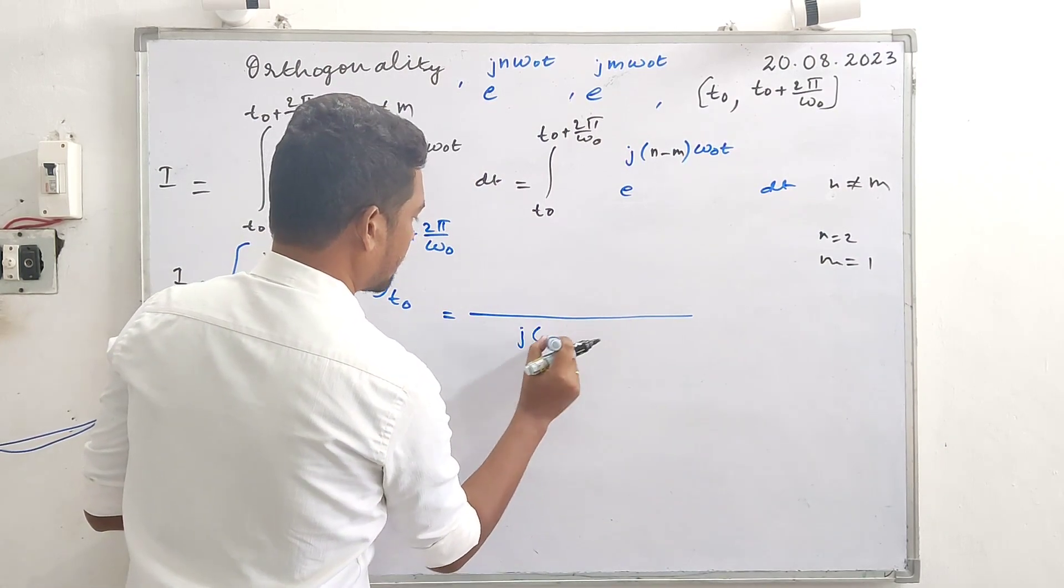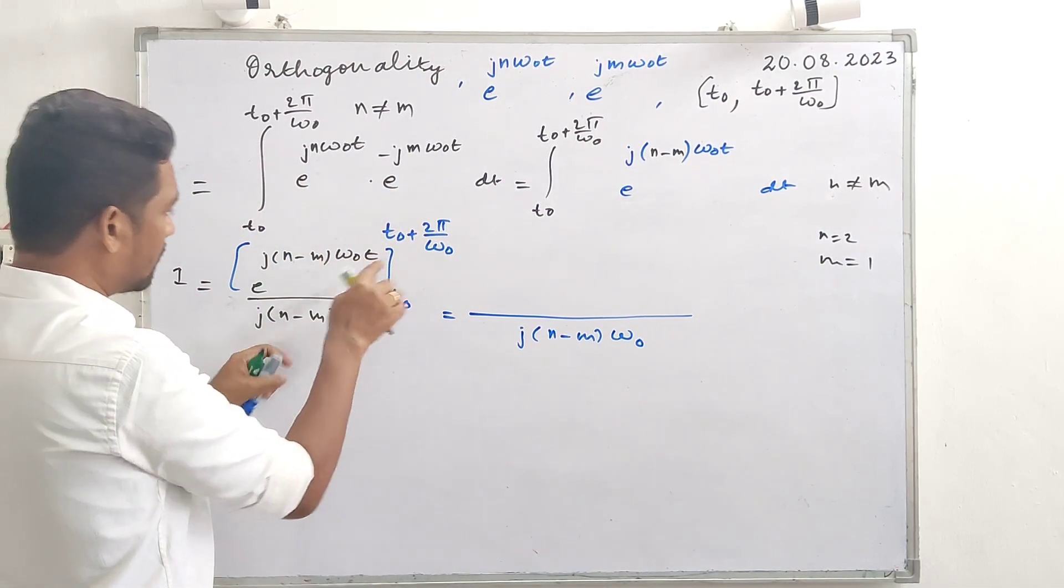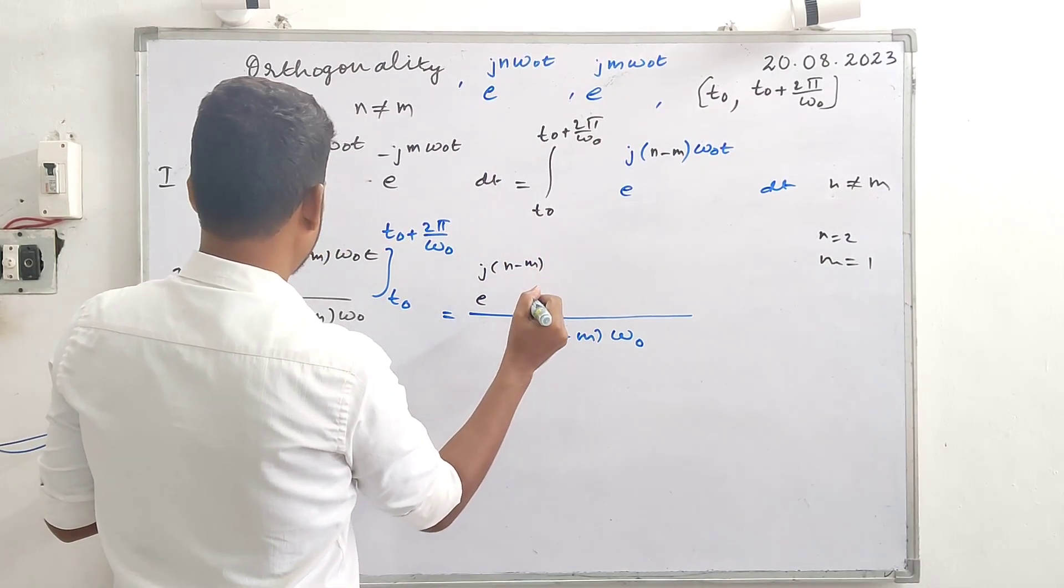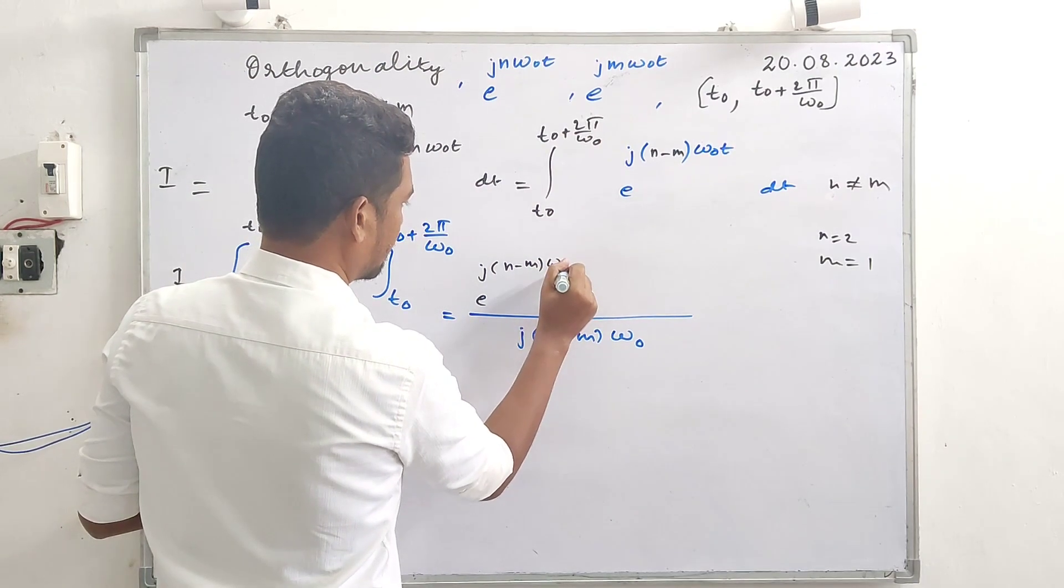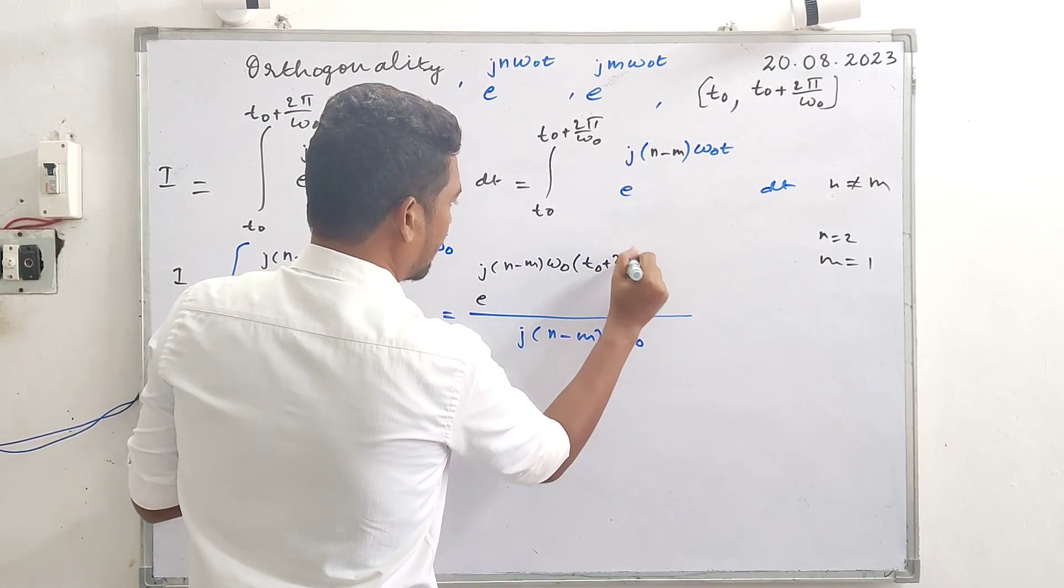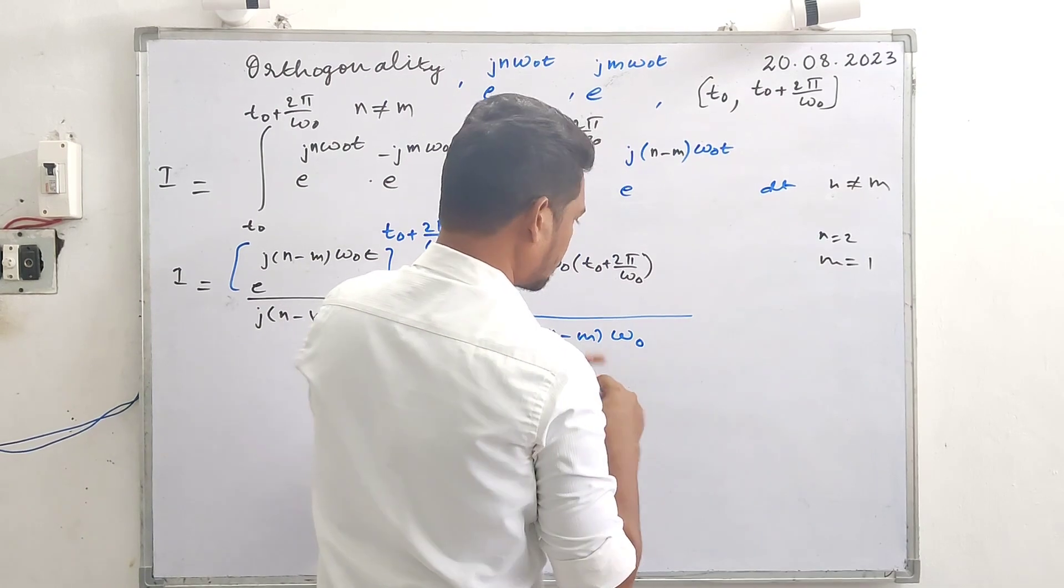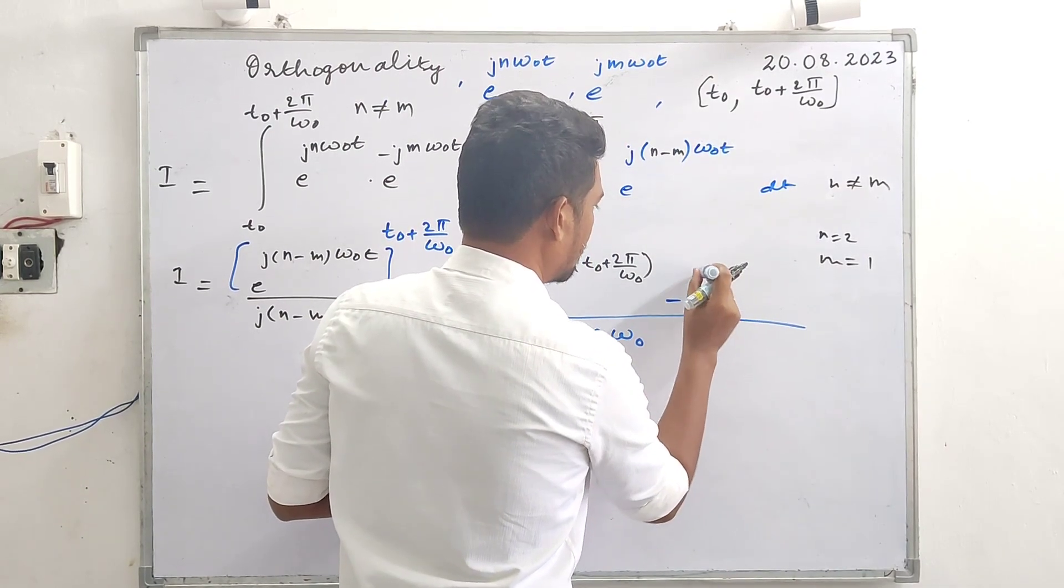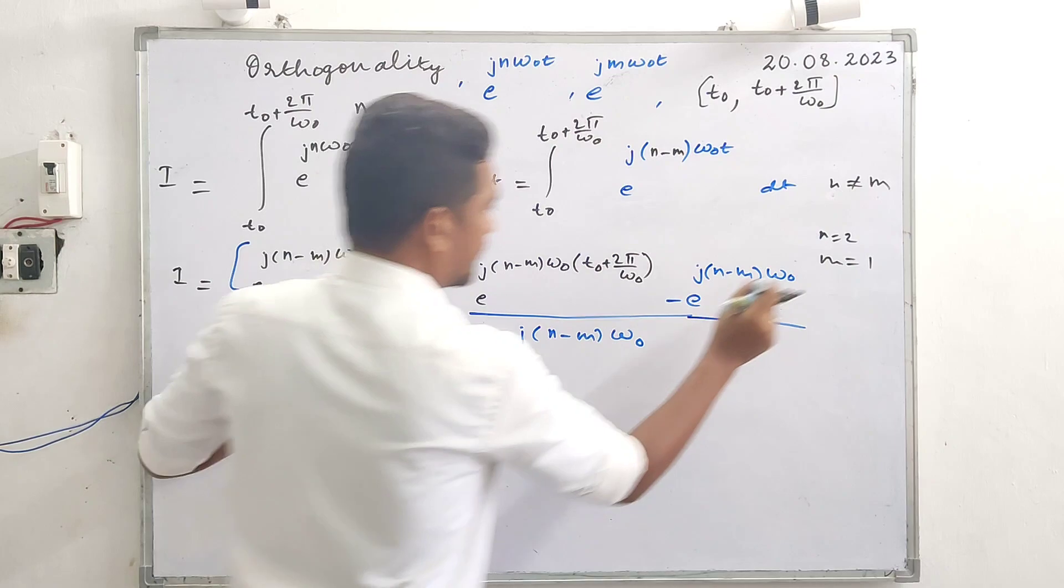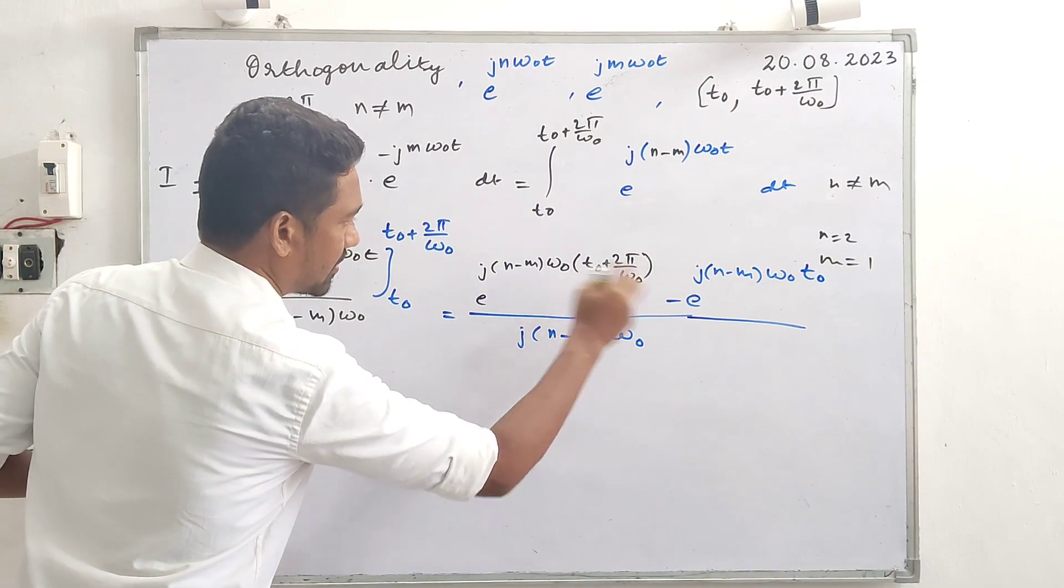Now plug in the limits. What do we have: denominator j n minus m omega naught as it is. Plugging in the upper limit: e rise to j n minus m omega naught, upper limit plug in - t naught plus 2 pi by omega naught. Plugging in the upper limit minus, minus e rise to j n minus m omega naught at t, lower limit t naught plug in.